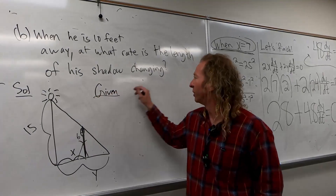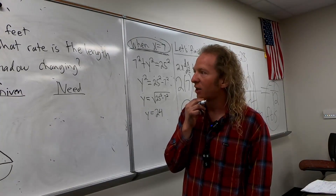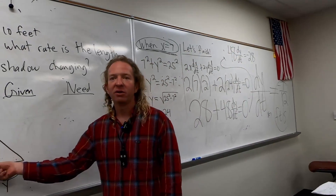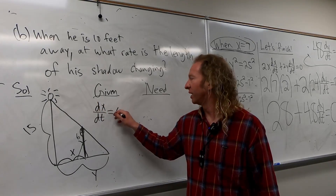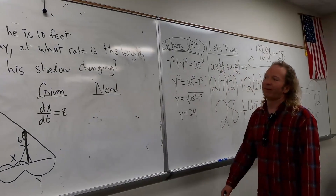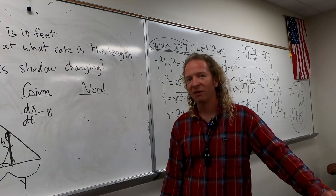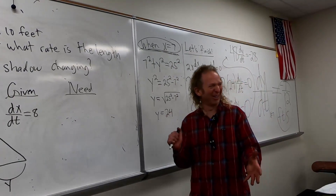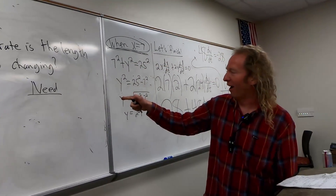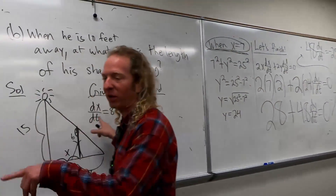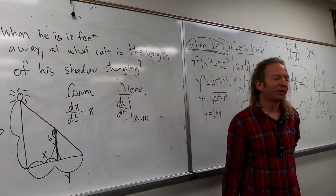So we're given how fast he walks — he walks at a rate of 8 feet per second away from a light. X is how far he is, so how fast he walks would be DX/dt, and that equals 8. He could do an 11-minute mile — he's basically jogging. So what we need: when he is 10 feet from the base of the light, we need DY/dt at X equals 10.